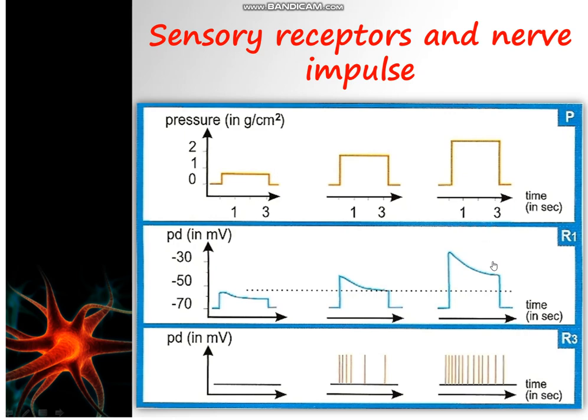So, the more the intensity of stimulation is higher, the more the receptor potential is higher, and the more the number of APs generated is higher. Therefore, in a nerve fiber, the intensity of stimulation — or the nerve message — is coded by modulation of the frequency of action potentials.